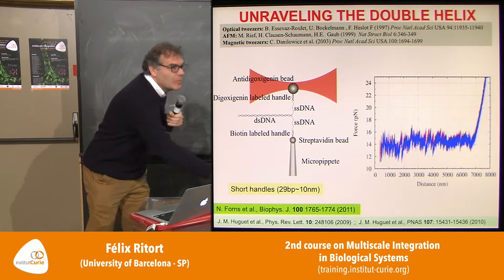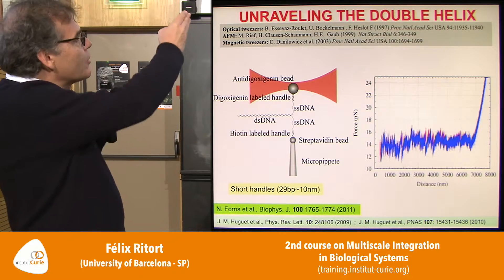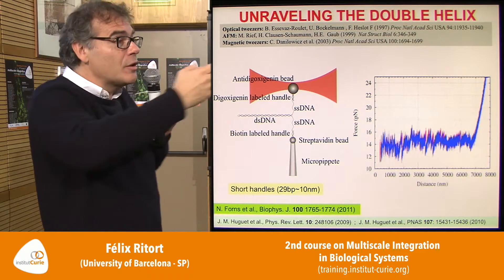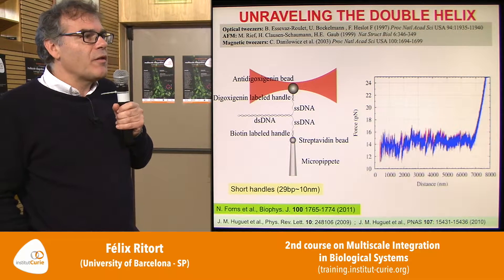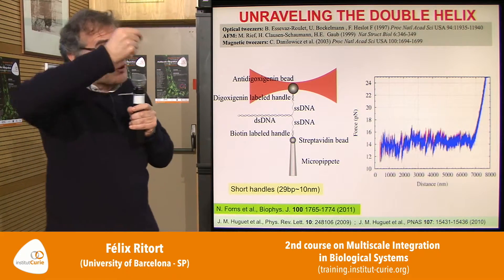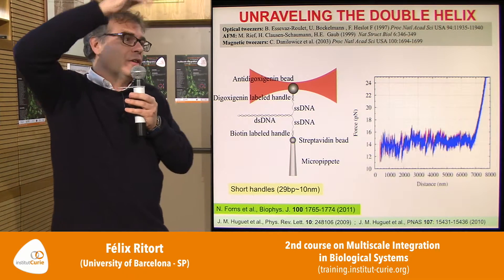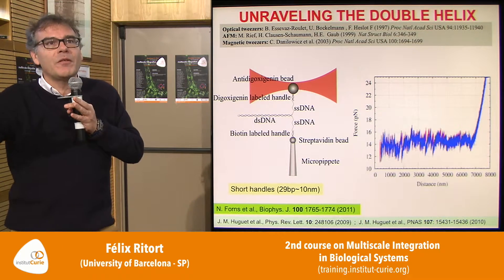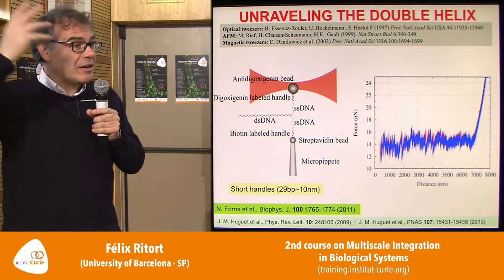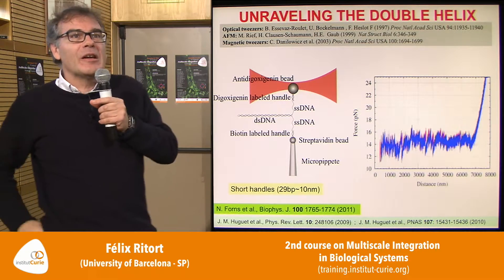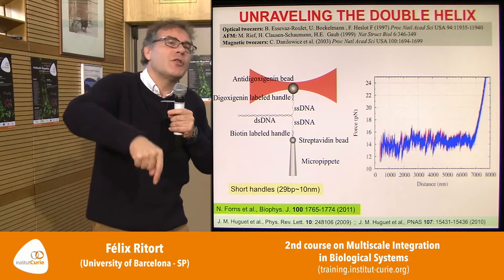The experiment shown was done at 25 nanometers per second. Over 7,000 nanometers this takes about 280 seconds — roughly four or five minutes — done very slowly to obtain reversible curves for free energy extraction. Our instrument can go up to 1,000 nanometers per second. AFM cantilevers can reach even higher loading rates and sometimes don't see refolding at all, though they have other issues like surface contact.